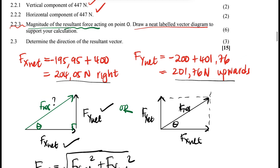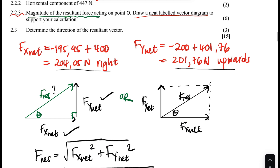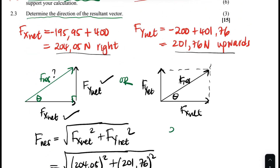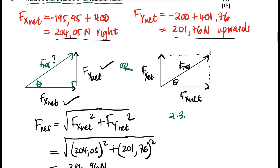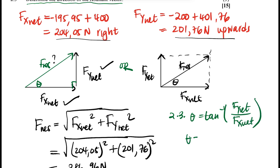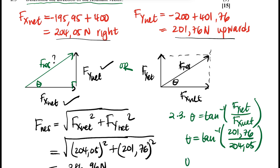You don't need to find the direction here because it's asked in question 2.3: determine the direction of the resultant vector. After calculating the resultant, you use tan⁻¹, so θ = tan⁻¹(FY net / FX net) = tan⁻¹(201.76 / 204.05). When you punch that into the calculator, the answer is 44.68 degrees.